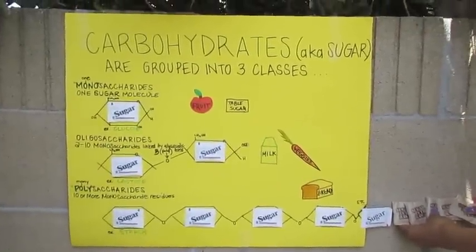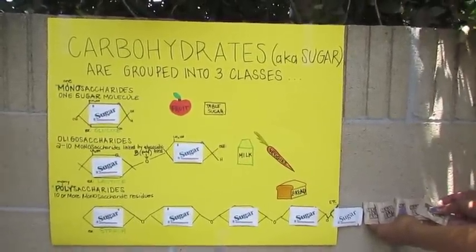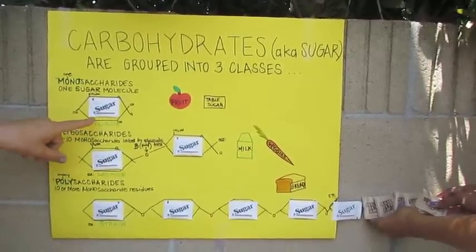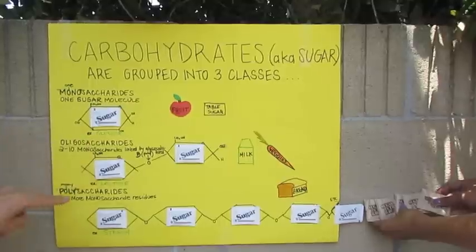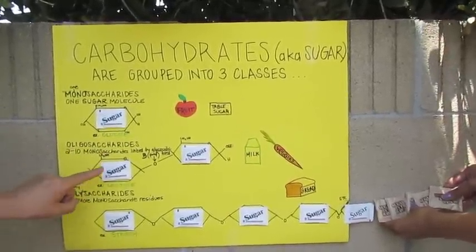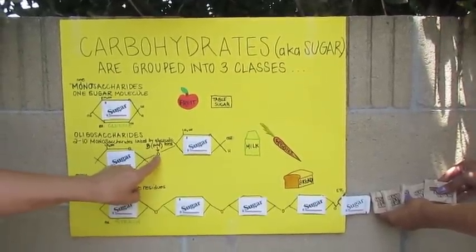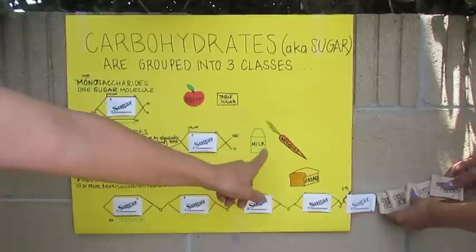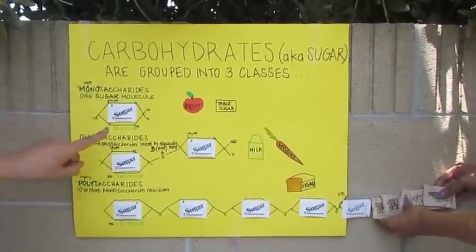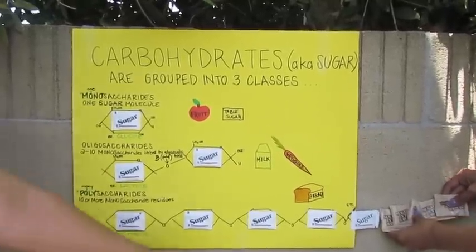Looking at it through a chemistry class perspective, you see the three groups of carbohydrates. You have your monosaccharides — this is one sugar molecule of glucose. If you take two to ten sugar molecules, you would get an oligosaccharide. Two molecules linked together with one glycosidic bond will make a different type of sugar like milk — this is lactose. If you were to link together ten or more monosaccharides, you get a polysaccharide or a starch like bread.